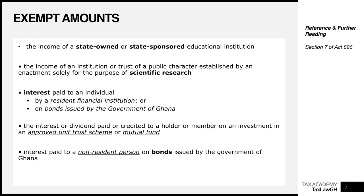The next exemption is for the income of an institution or trust of a public character, established by an enactment or law solely for the purpose of conducting scientific research. An example that comes to mind is CSIR — the Council for Scientific and Industrial Research — which does a lot of research in Ghana. Any income made by CSIR would ordinarily be exempt from income tax because the government wants to promote scientific research. I also expect the Noguchi Institute of Medical Research to enjoy a similar exemption.